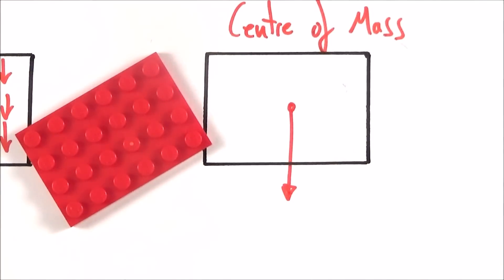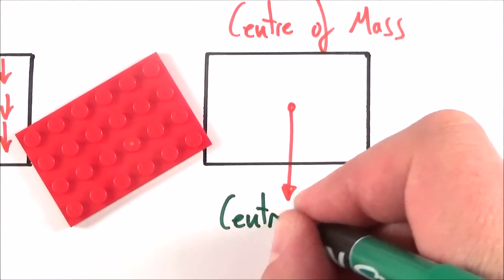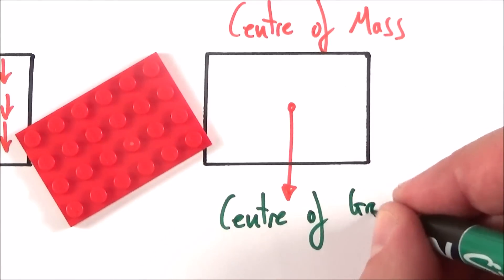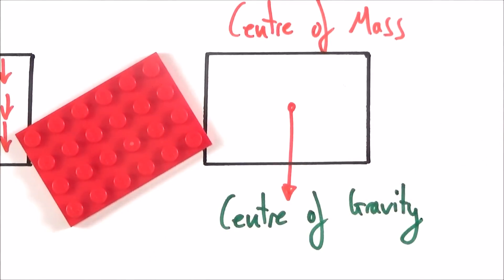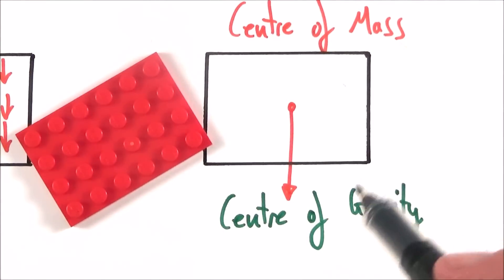We can also think about this in terms of the weight of all the objects and we can call the same point the centre of gravity. It's important to note that on Earth where we have a fairly uniform field, the centre of mass and the centre of gravity are at exactly the same point.